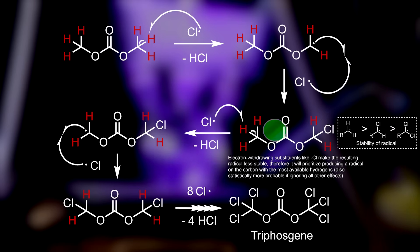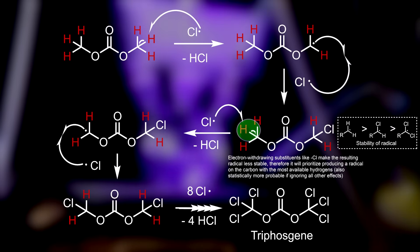The reaction always prefers abstraction from a carbon with the least chlorines already attached, because radicals with electron-withdrawing groups like chlorine are less stable. Statistically, it is also more probable that a hydrogen is abstracted from an atom that has more hydrogens available. This means the reaction must always go to completion and the maximum amount of chlorine must be added — otherwise we end up with partially chlorinated products that are not useful. To tell if the reaction is finished: if the reaction stays yellow from dissolved chlorine even under irradiation, it means no more hydrogens are available and the reaction is finished, so no analysis is required.